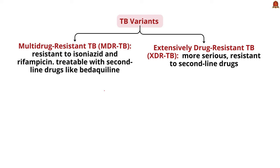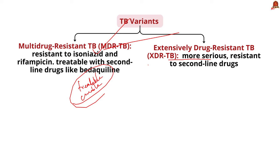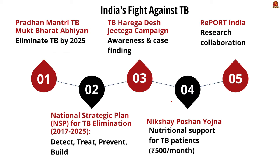Regarding variants and medications: Multi-Drug Resistant TB (MDR-TB) is caused by bacteria that do not respond to isoniazid and rifampicin — the two most powerful frontline anti-TB drugs. MDR-TB is treatable using second-line drugs like bedaquiline. The second variety is Extensively Drug-Resistant TB (XDR-TB), a more serious form of MDR-TB caused by bacteria that do not respond to the most effective second-line anti-TB drugs.